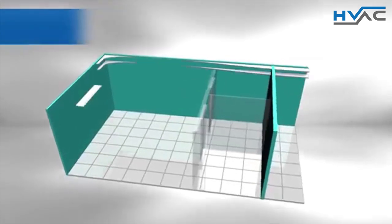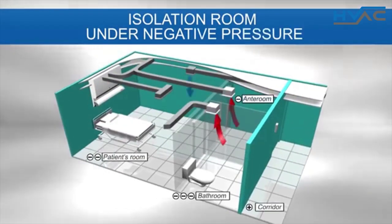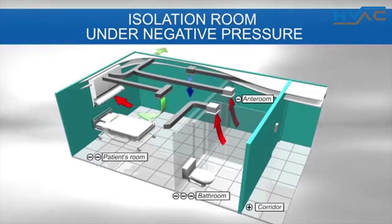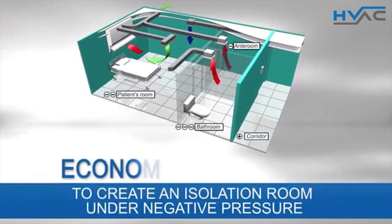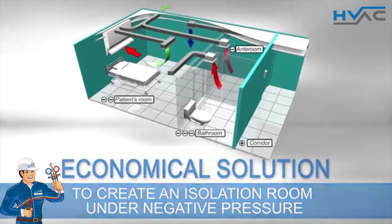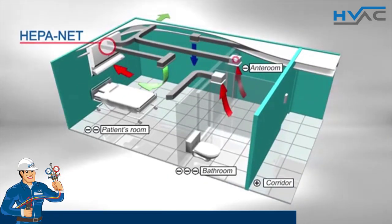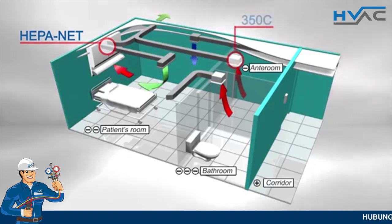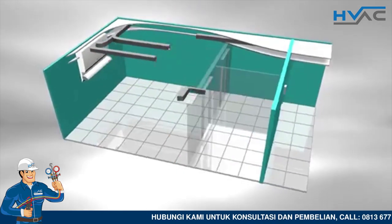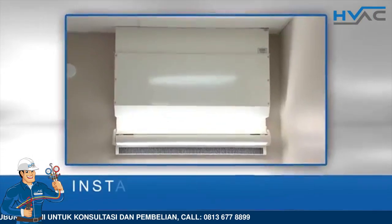Quality Air presents the respiratory isolation room under negative pressure. Quality Air provides the fastest and most economical way to create a full negative pressure isolation room system using three units: the HEPA net for the patient's room, the 350C for the ante room, and the 100C for the washroom.